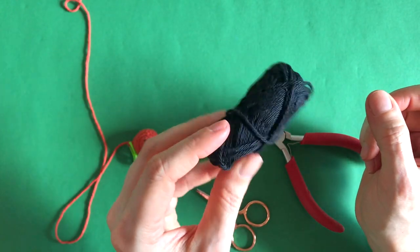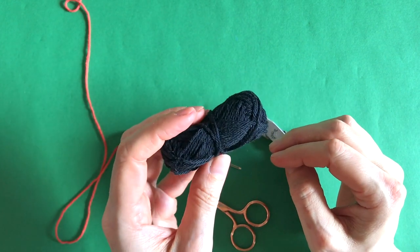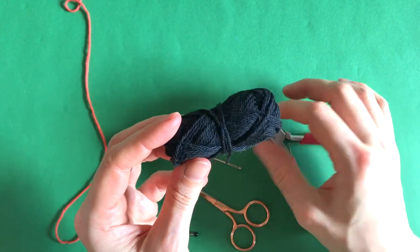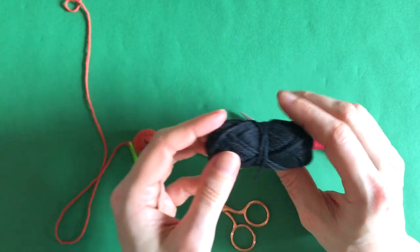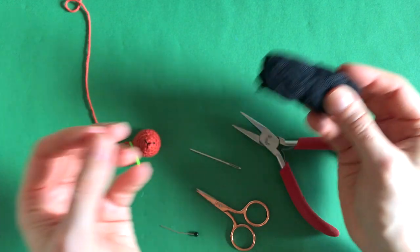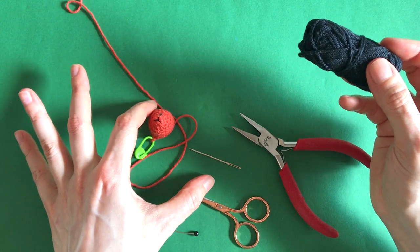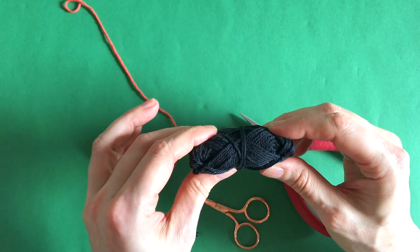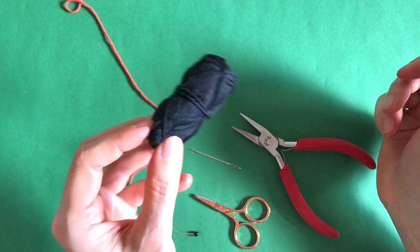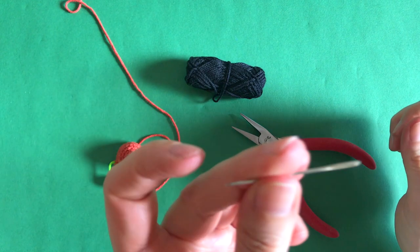We'll need yarn. So I'm using this black Scheepjes Catona yarn which is I believe lighter than DK or light worsted weight yarn. If you know what weight Scheepjes Catona is please let me know in the comments, I always forget. But you can use any yarn depending on the size of your amigurumi. I mean this obviously would be quite small, maybe this much all together, so I'm going for this yarn. But depending on how large you would like the eyes to be, you can choose lighter or heavier yarn or even embroidery thread.